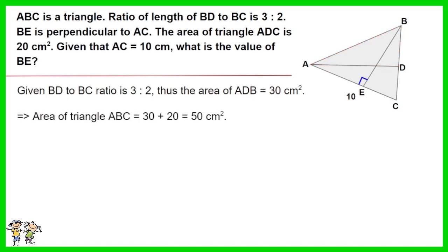Area of triangle ABC equals 30 plus 20 equals 50 cm squared. Half of AC times BE equals 50 cm squared. Thus half times 10 times BE equals 50 cm squared.